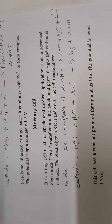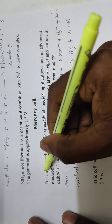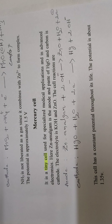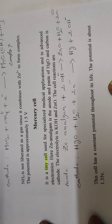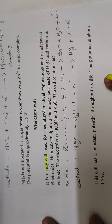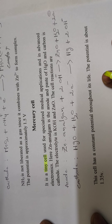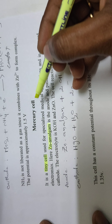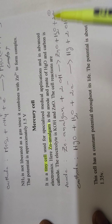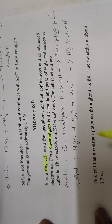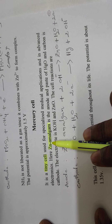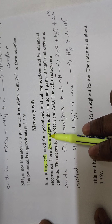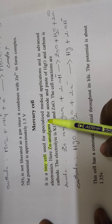The mercury cell is a tiny, small cell used for specialized medical applications, mainly for hearing aids and watch batteries, as well as in advanced electronics. In the mercury cell, zinc amalgam acts as the anode. Amalgam is a combination of a metal with mercury — here the majority is zinc with a small percentage of mercury.